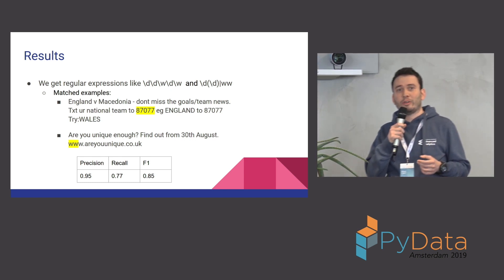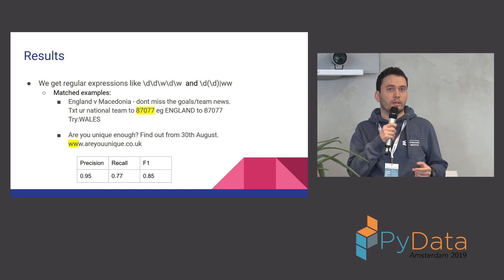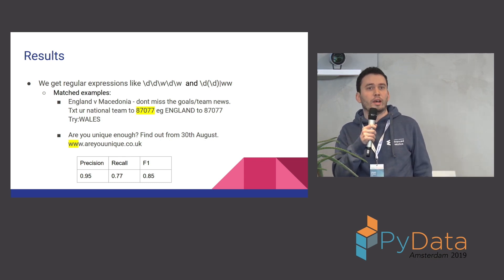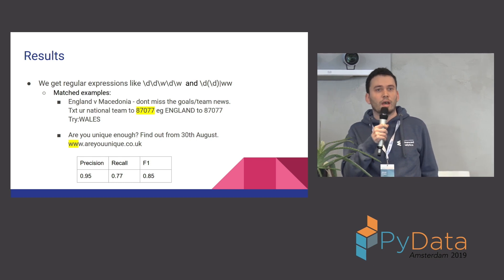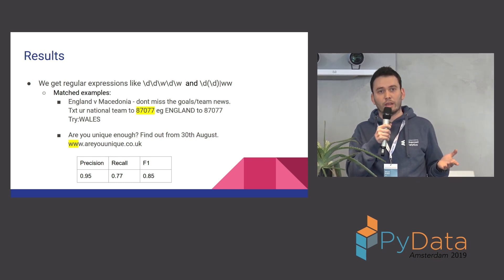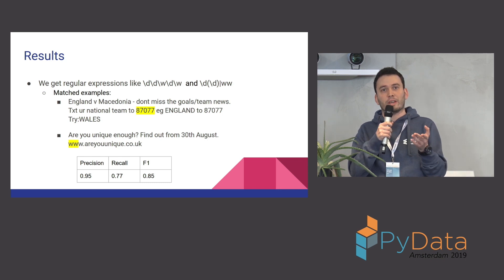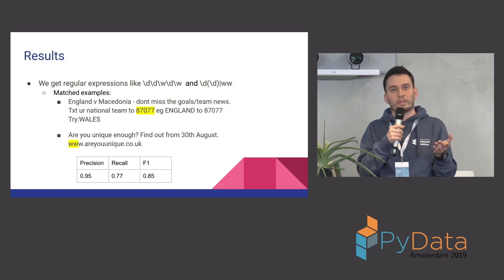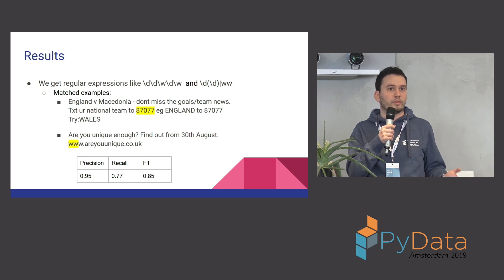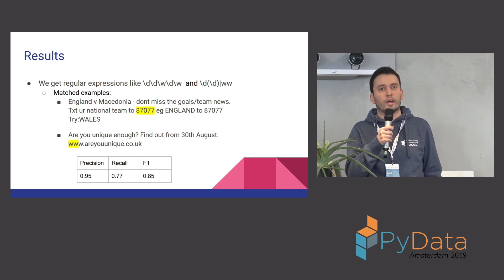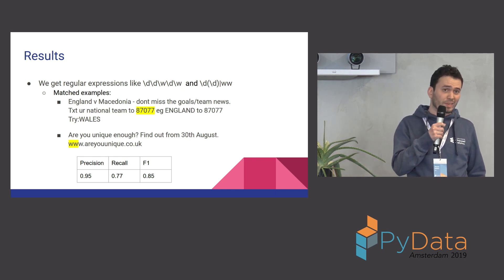Here are the results of the algorithm. The algorithm finds two regular expressions in the spam data. For example, if you have websites in it, then it is most probably spam — the algorithm catches that with 'ww'. And if there are codes or long digits, the algorithm catches that with the regex you see: digit, digit, and word, digit, word.